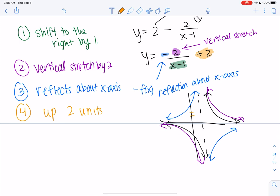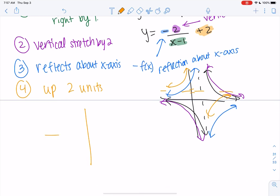So it goes up 2, so it looks like that. And I'll redraw it without all this stuff.